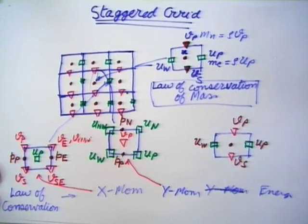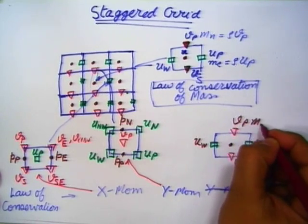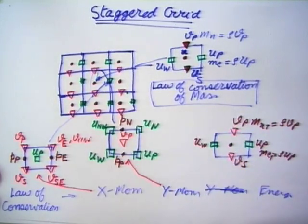The second key idea is mass flux calculation. Mass flux appears in mass conservation and also in all transport equations — x-momentum, y-momentum, energy — in the advection term. The bulk motion of the fluid causes momentum and energy transport. For mass conservation and energy conservation, M_east = ρ·u_P and M_north = ρ·v_P — no interpolation is needed.